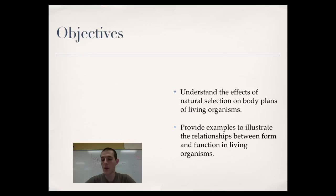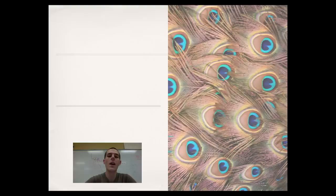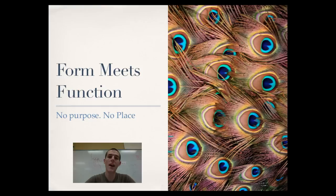First thing to note: in the living world, form meets function. If something does not have a purpose, it does not have a place. Natural selection is very good at weeding out things that don't help an organism survive. Humans might be the exception, but an example on the right—peacock feathers. You'd think, why would natural selection allow something as ridiculous and beautiful as peacock feathers? Clearly it doesn't help survival, but actually it does.